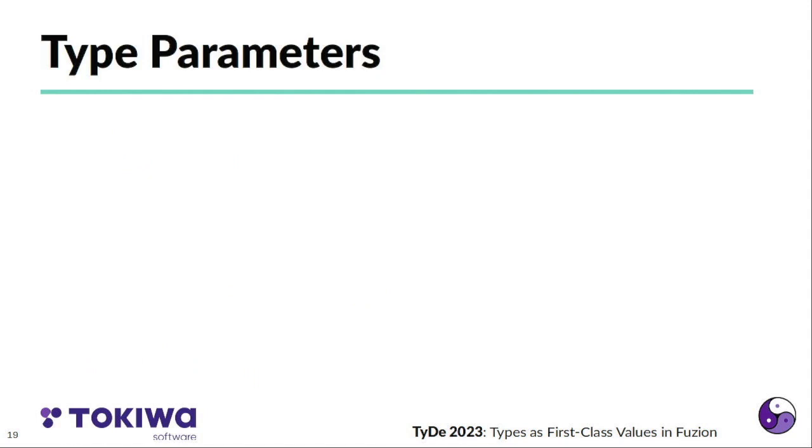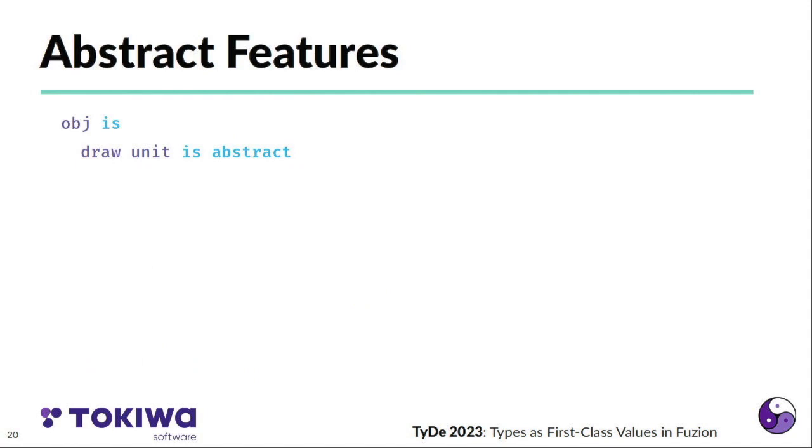The second type of polymorphism is via type parameters. First what I need is something called abstract features. So we can define a feature object with an inner feature draw that is declared abstract. If we do something like that, it's very similar to defining an interface in Java or a type class in Haskell.